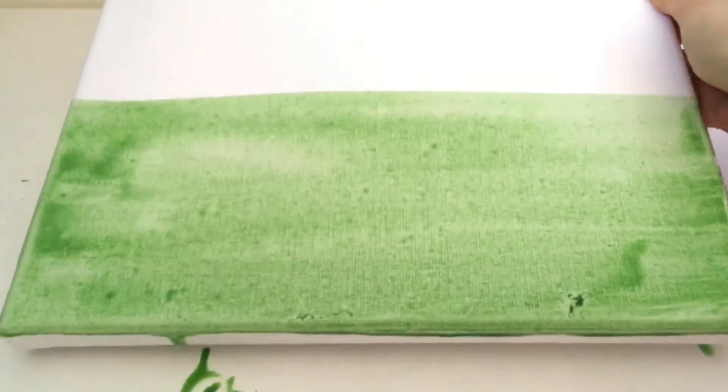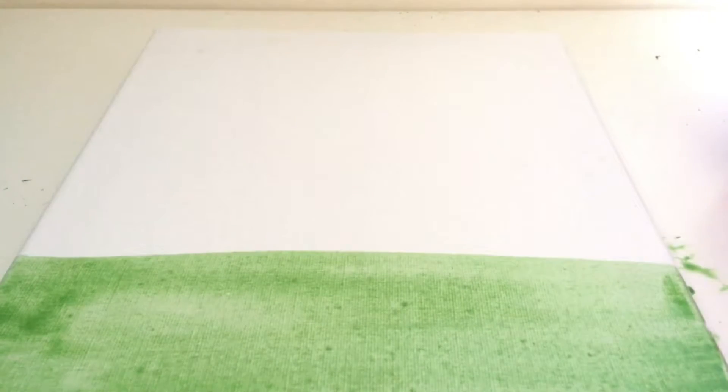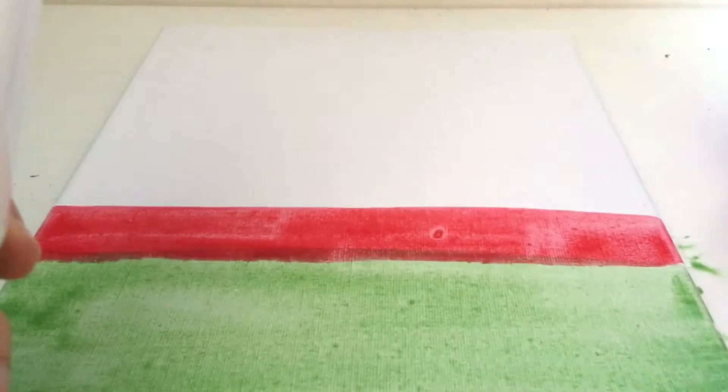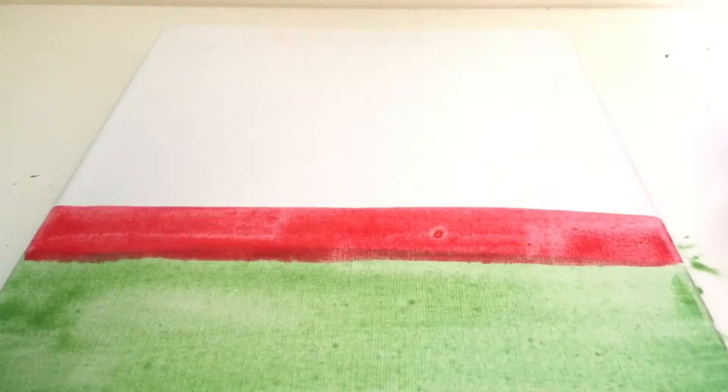Once you have painted the bottom of your canvas green, water down some red paint and paint this above the green. Gradually add in more white paint to your red paint as you paint it onto the canvas.